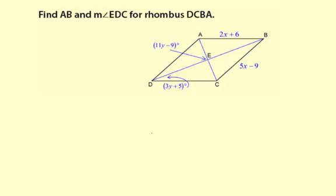Find AB and measure of angle EDC for rhombus DCBA. AB is represented by 2x plus 6. We know we have a rhombus.